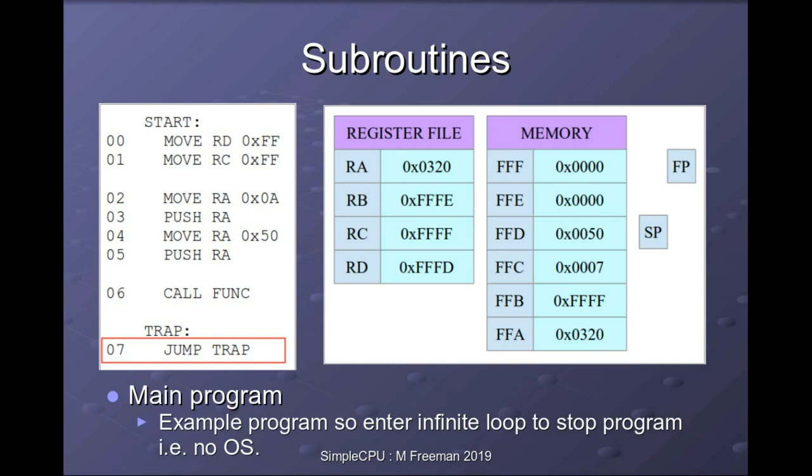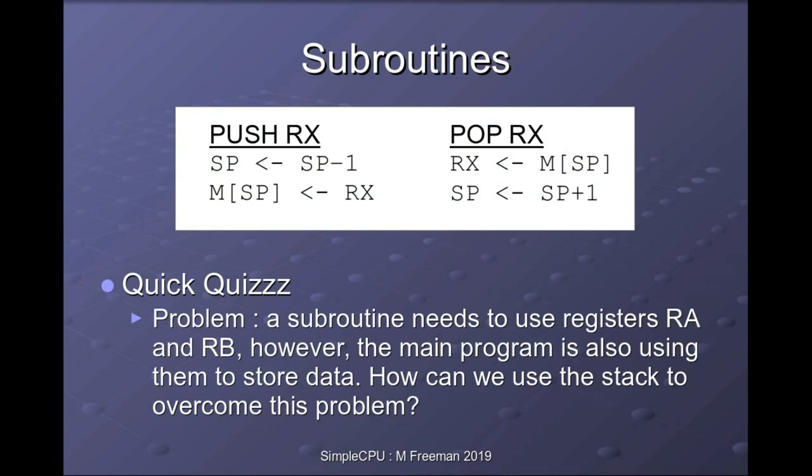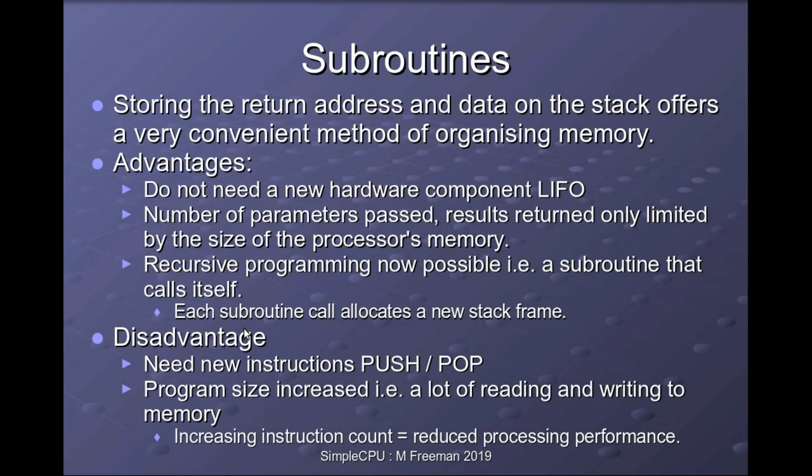Quick quiz: what happens if a subroutine wants to use a register the main program is already using? If the subroutine uses that register, it corrupts the main program's state. How can you preserve that register value using the stack? The answer: as registers are a shared resource, as soon as you enter a subroutine you push the values of all registers you want to use onto the stack, making a copy. Within the subroutine you can overwrite those registers. When you leave, you pop them off to restore the original values, so the main program sees no change.